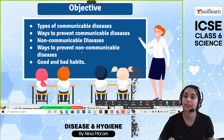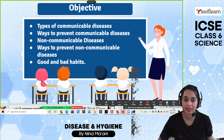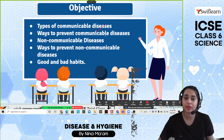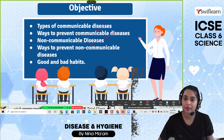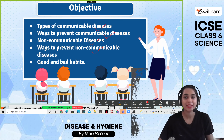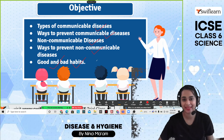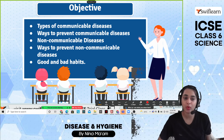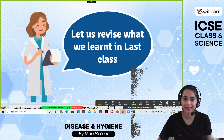Today we're going to learn about disease and hygiene, part 2. Today's topics are: types of communicable diseases, ways to prevent communicable diseases, non-communicable diseases, ways to prevent non-communicable diseases, and good and bad habits. Get ready with your book and pen, and let's go.